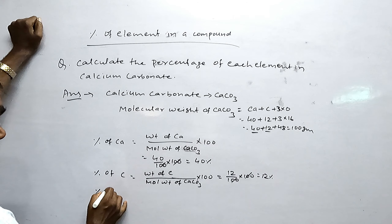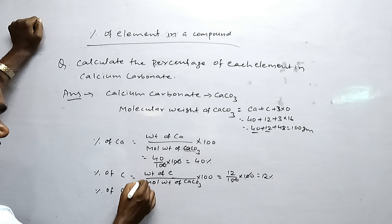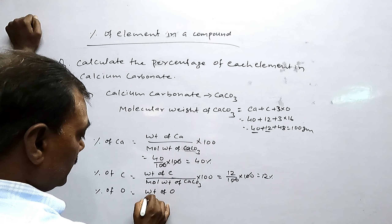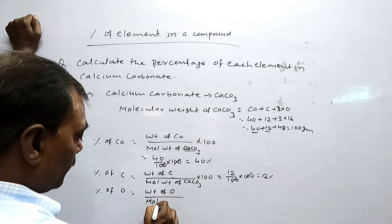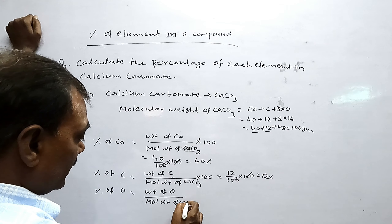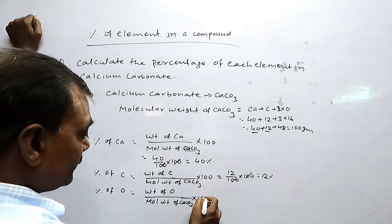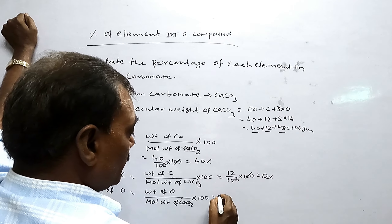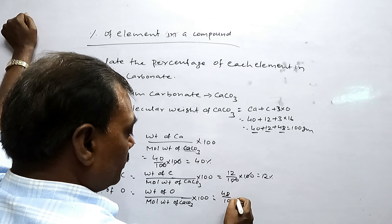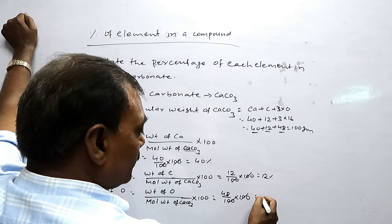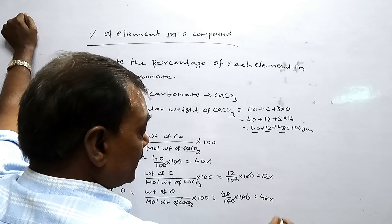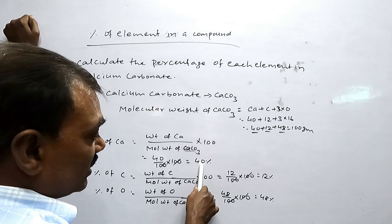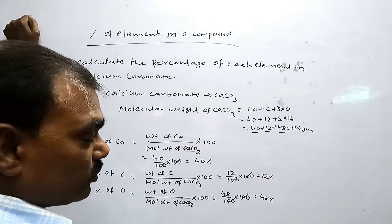Percentage of oxygen: weight of oxygen by molecular weight of CaCO3 into 100. Weight of oxygen is 48. So 48 by 100 into 100 gives 48 percent. And when we add all percentages: 40 plus 12 plus 48 equals 100 percent.